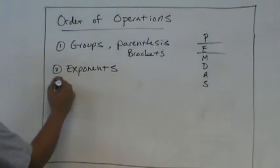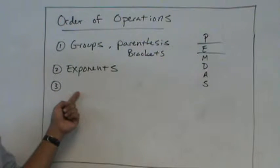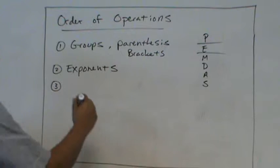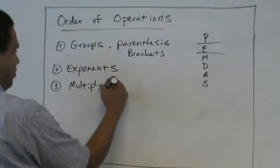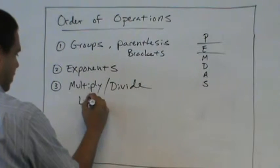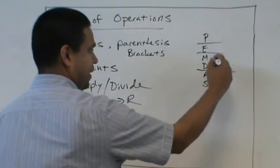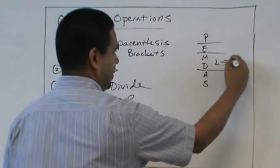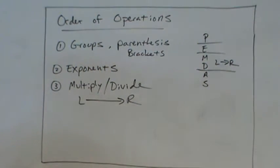Now the next one's tricky. This is where some students have confusion or concern. What would be the third step? Multiply and divide left to right. That's the key right there. So we multiply and divide from left to right. So I'm going to put that right there.